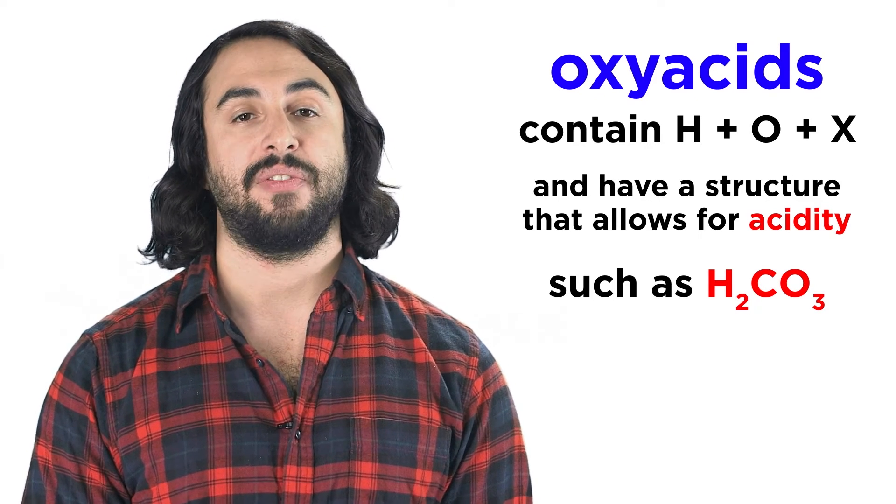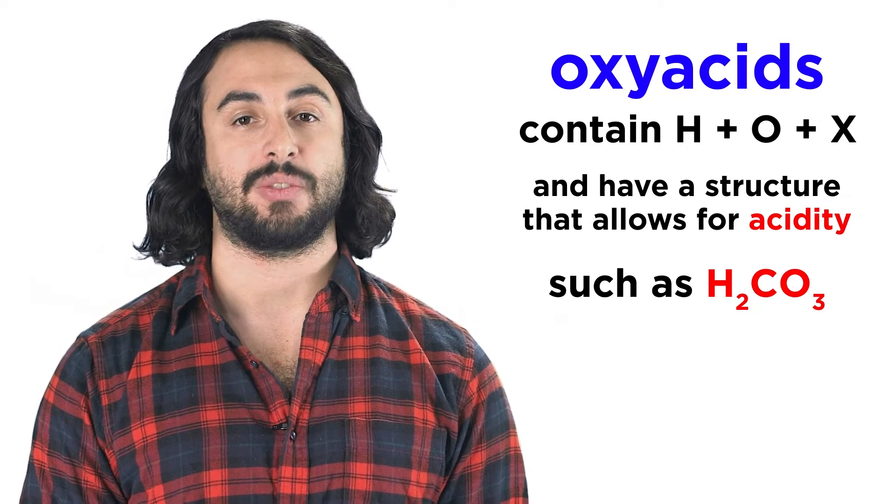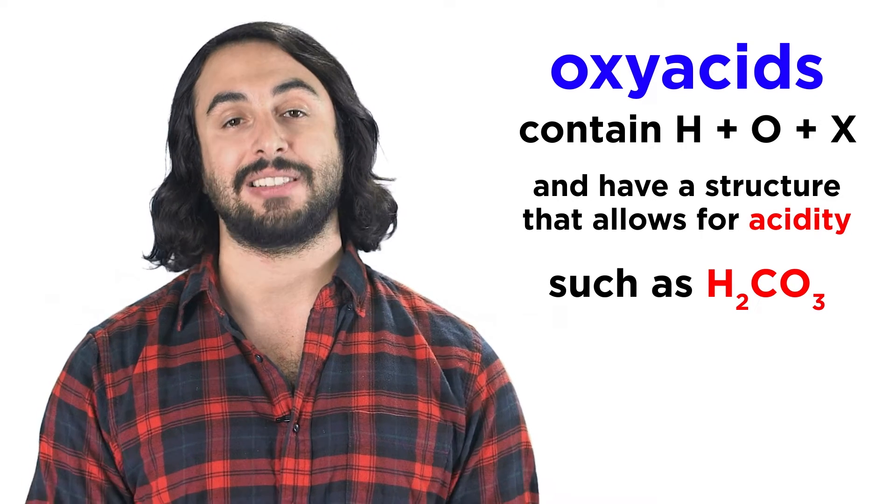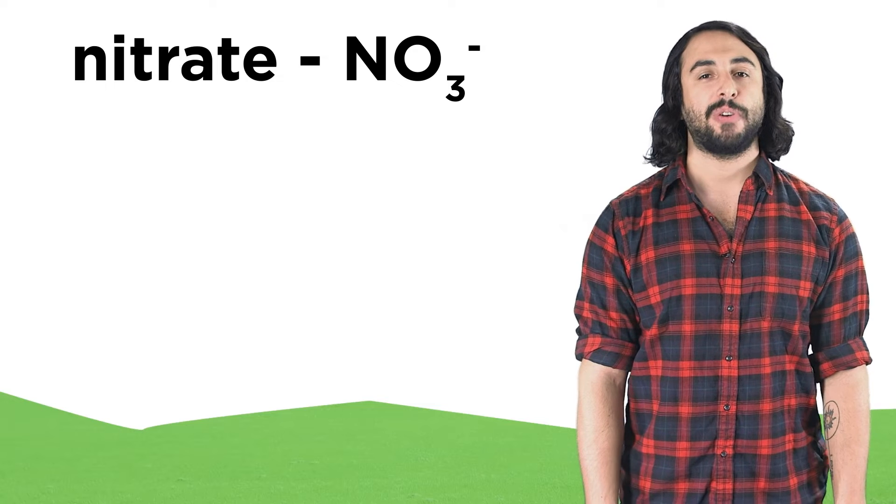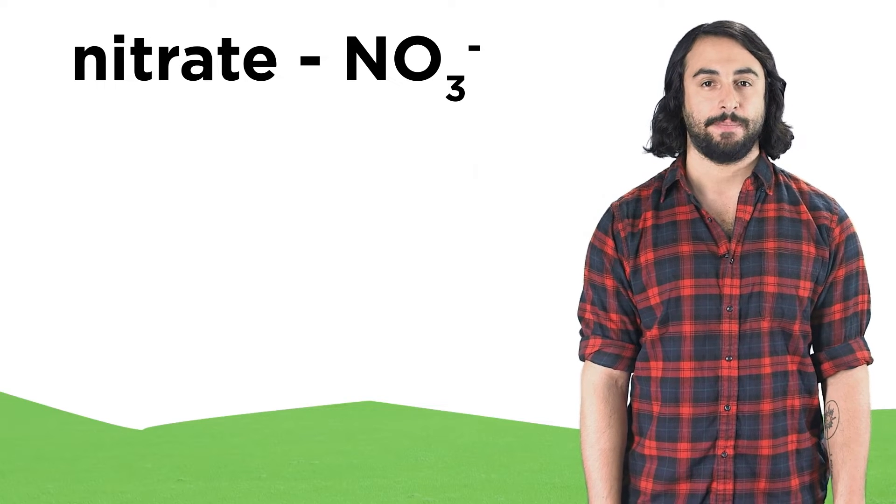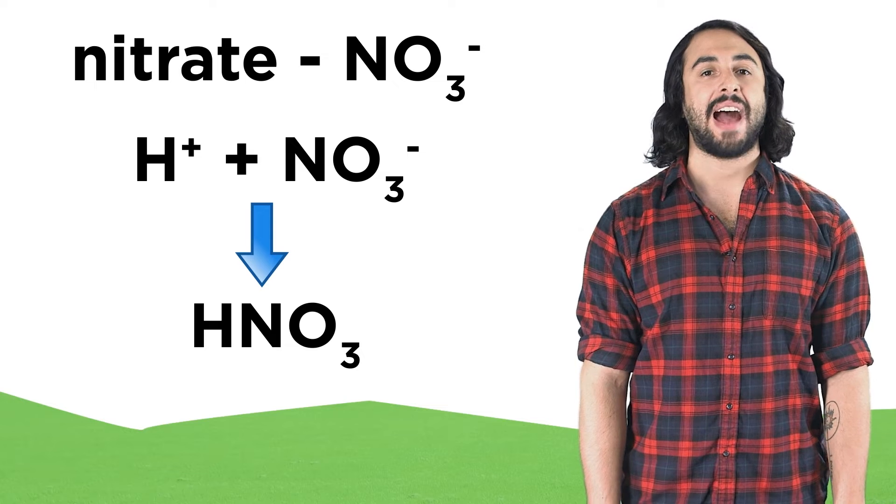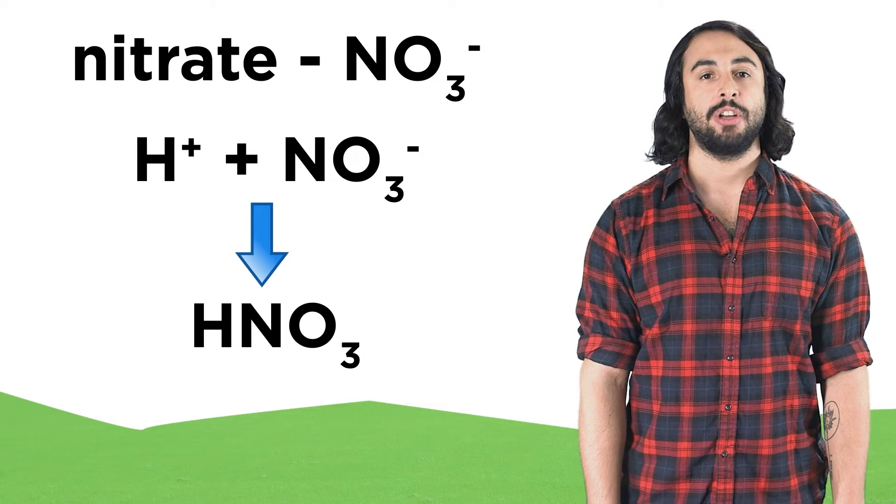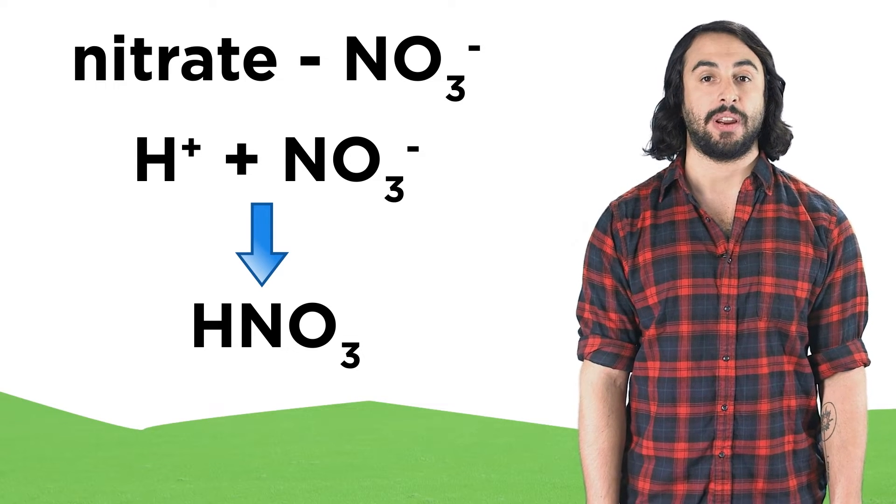So let's look at the various polyatomic ions we can use to build oxyacids. First let's look at the nitrate ion. This is NO3 minus. We can add a hydrogen ion, or proton, to the nitrate to get HNO3,